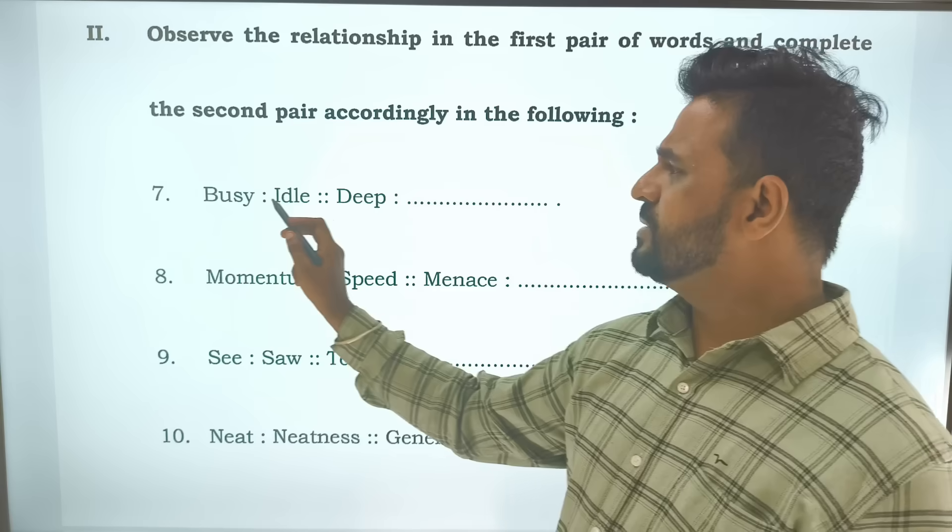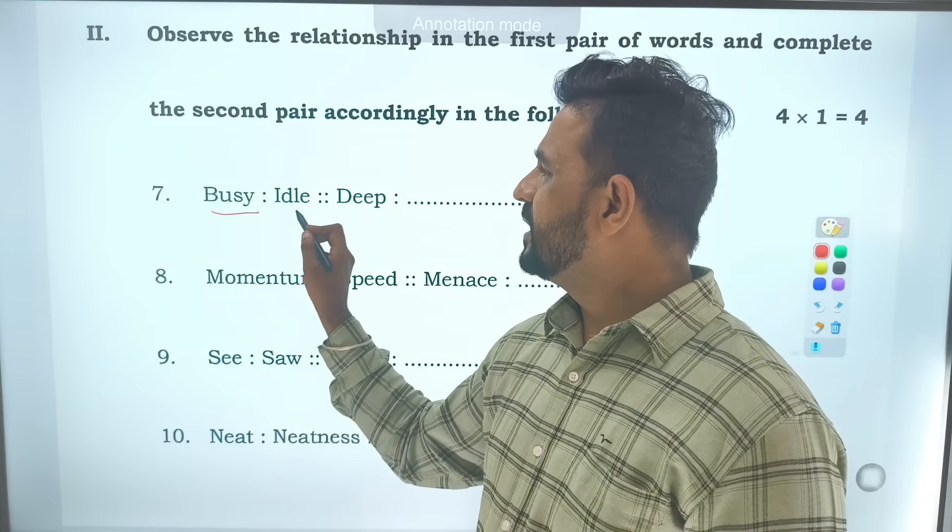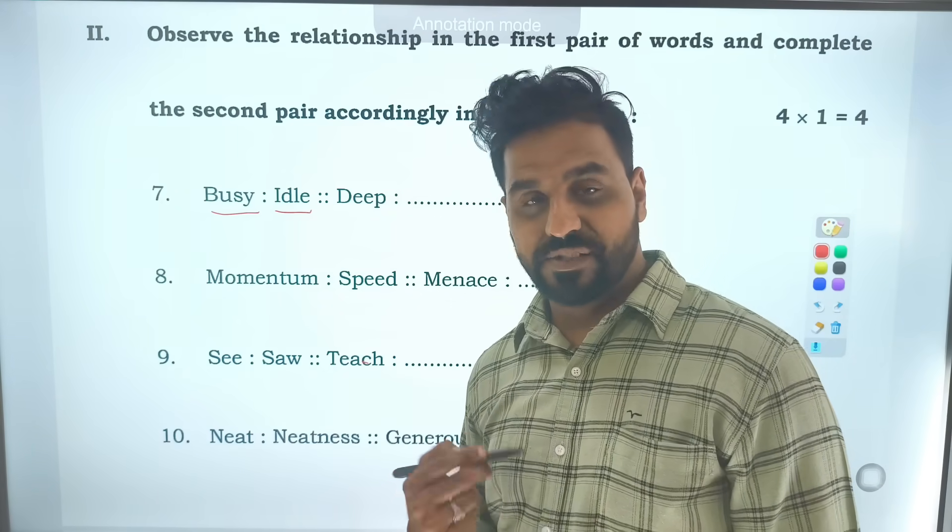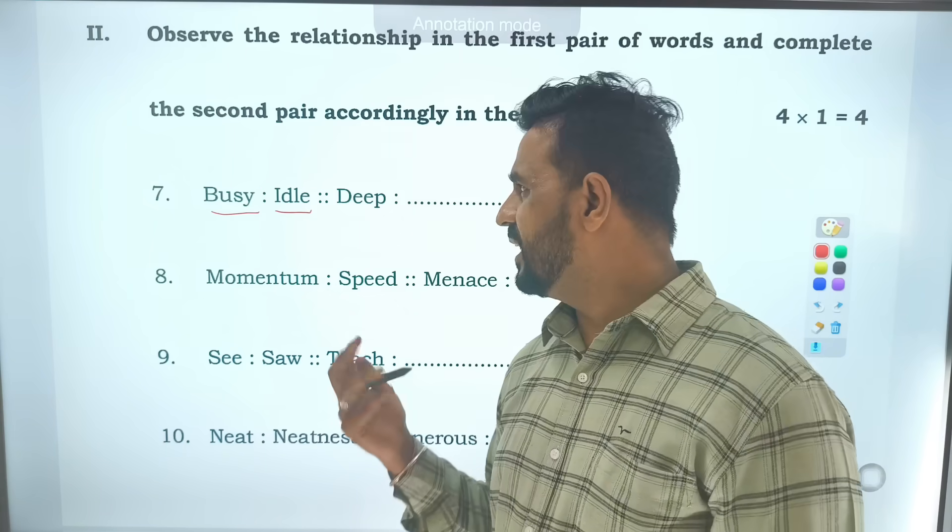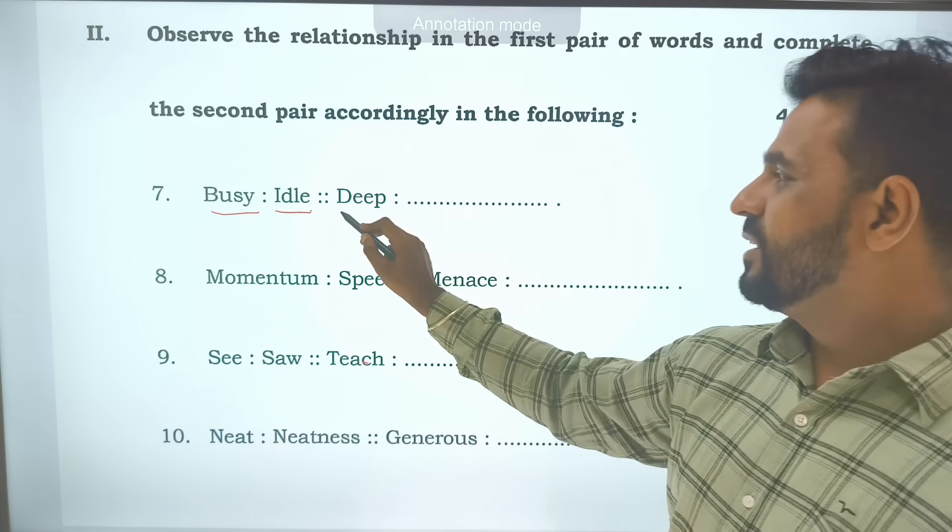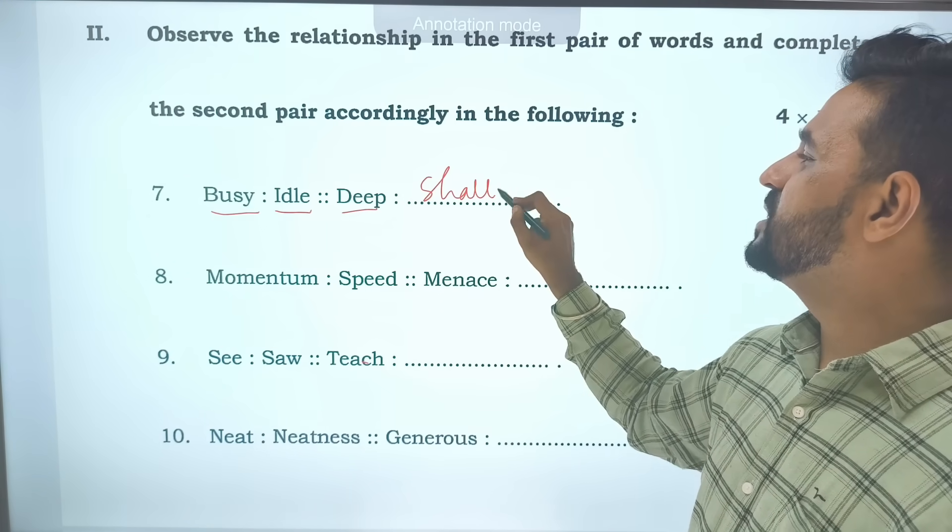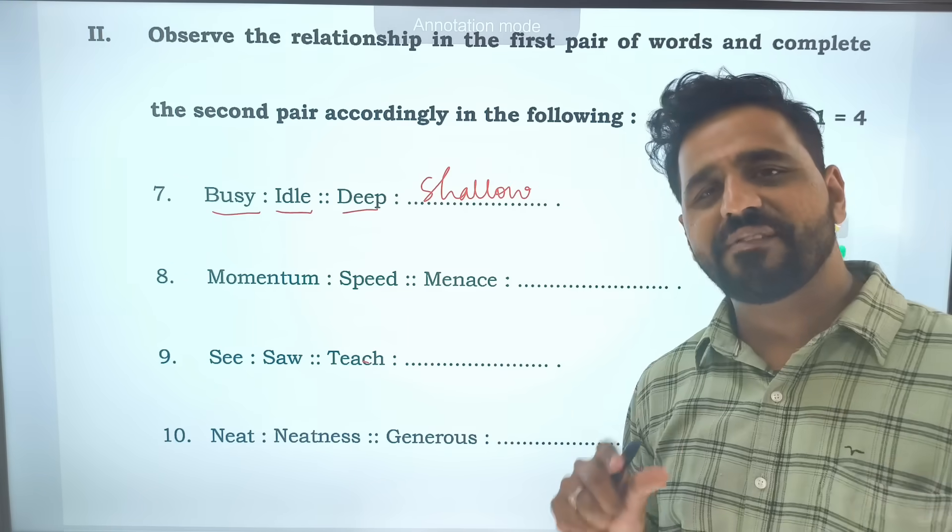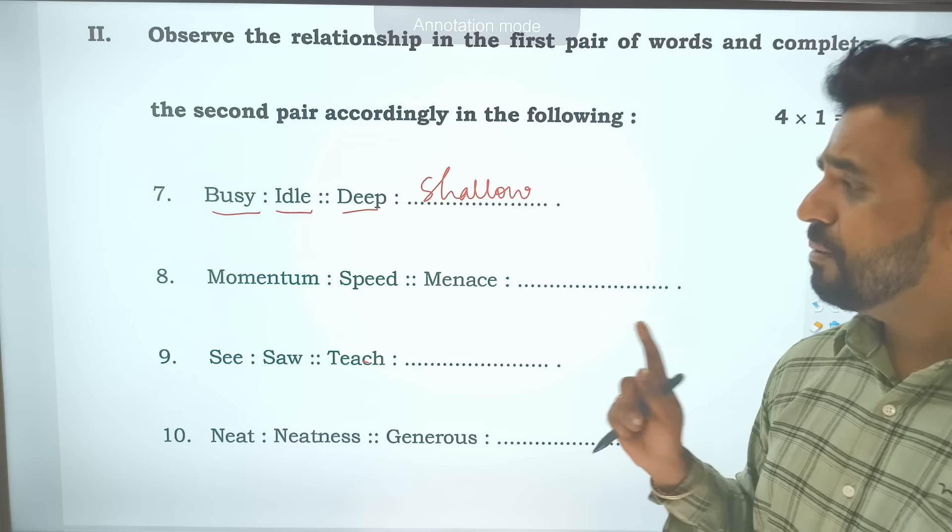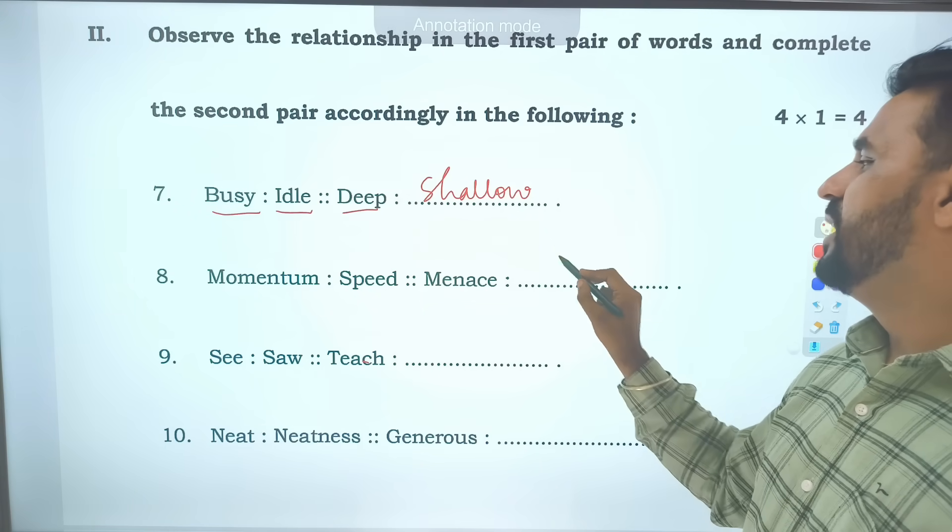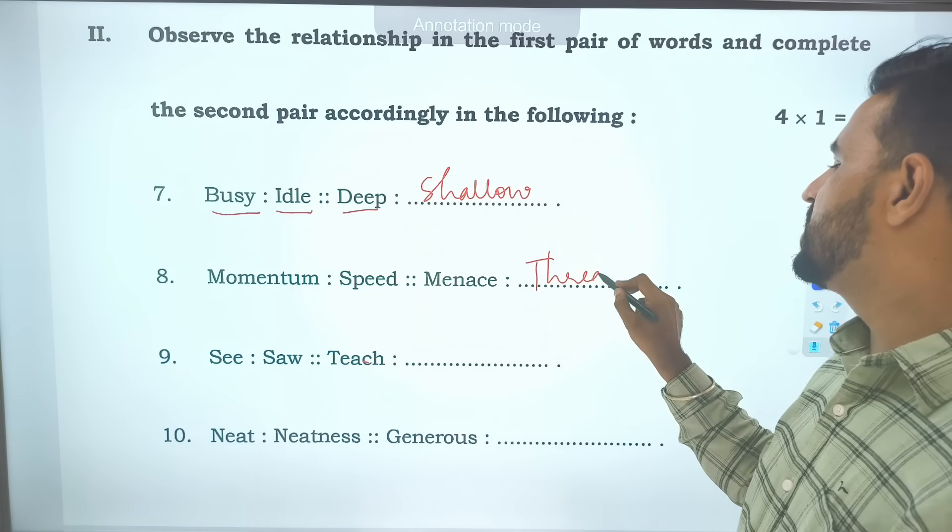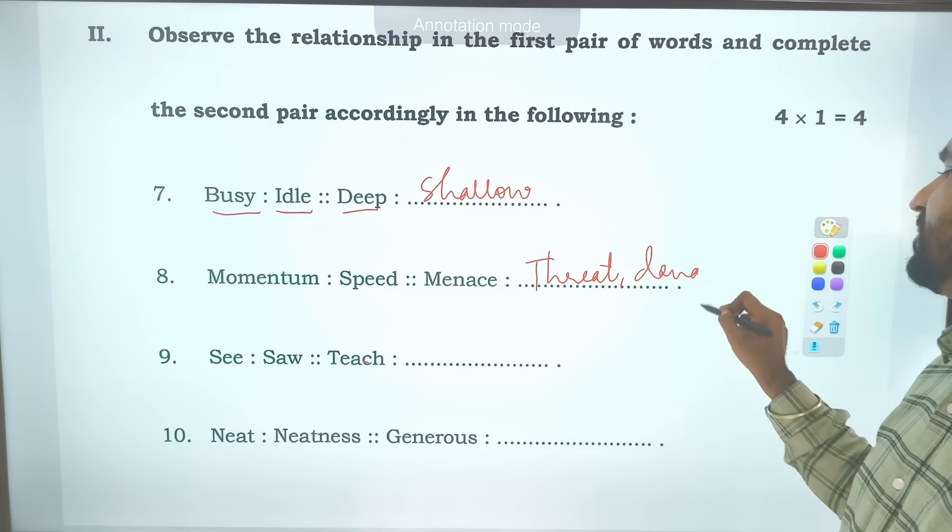Question number 7. Busy idle. The opposite of busy is idle. Then deep, the opposite is shallow. The one which is not having much depth we call it shallow. Momentum, meaning is speed. Menace means what? Menace means threat or danger. This one is very important.